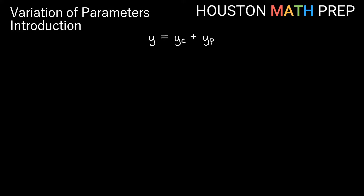Our overall general solution will be y equals the complementary function plus the particular function. In the variation of parameters method, we will always have the same form for y sub p: it will equal u1·y1 plus u2·y2, where y1 and y2 are the two functions that make up our fundamental set of solutions from the complementary function — so they come from the associated homogeneous equation we already solved.